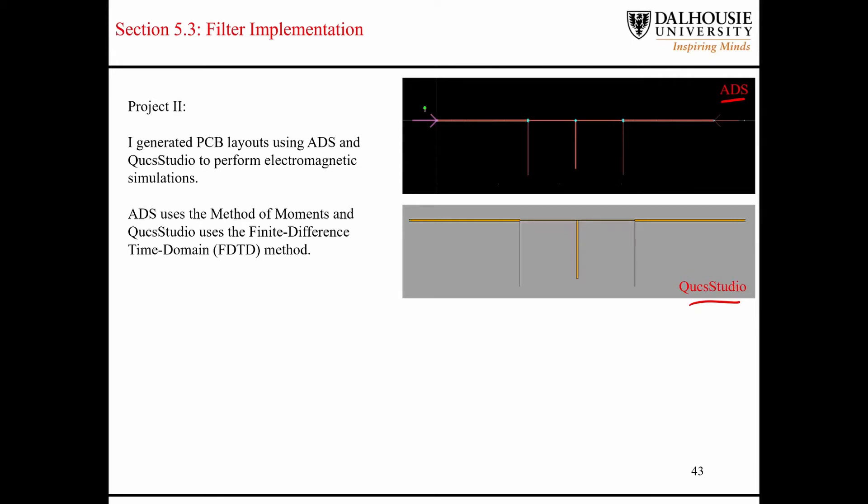Like I mentioned to you guys before, in the circuit, the circuit doesn't model coupling between conductors like this. Depending on your frequency of operation, there's going to be various degrees of coupling here. Doing the electromagnetic simulation allows you to model the structure more realistically. ADS uses the method of moments, and QUCS Studio uses the finite difference time domain method.